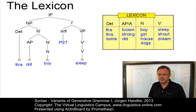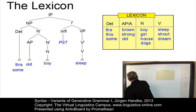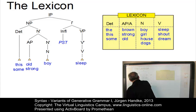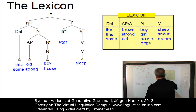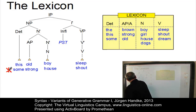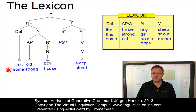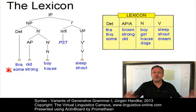But as an alternative, we could also generate sentences that sound extremely odd – for example: strong house shouts. You will possibly agree that such a sentence is ungrammatical. So such strange cases have to be avoided, and any promising theory of grammar needs a more sophisticated lexicon and more elaborate lexical insertion principles that do more than just match word classes with terminal nodes.